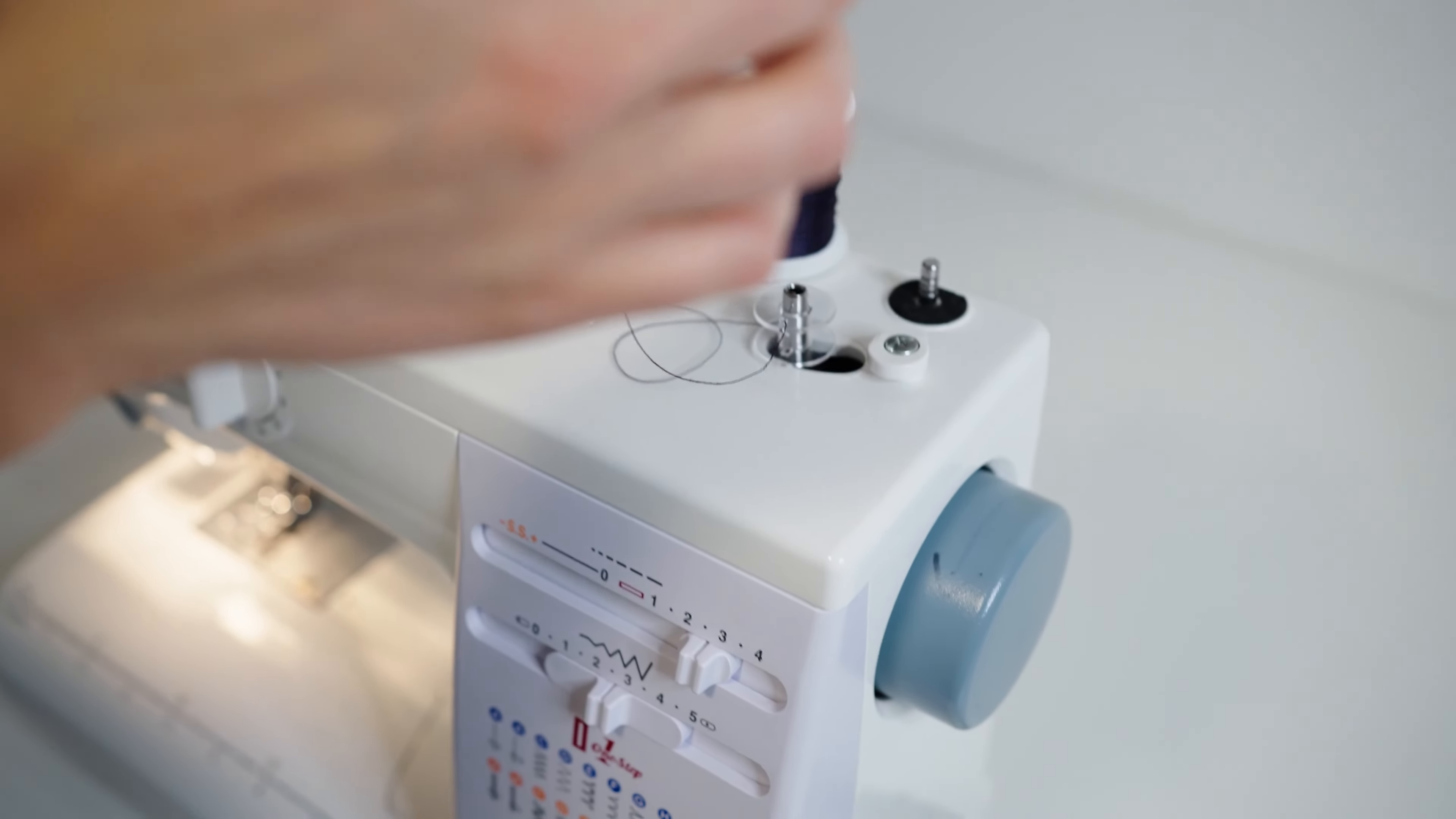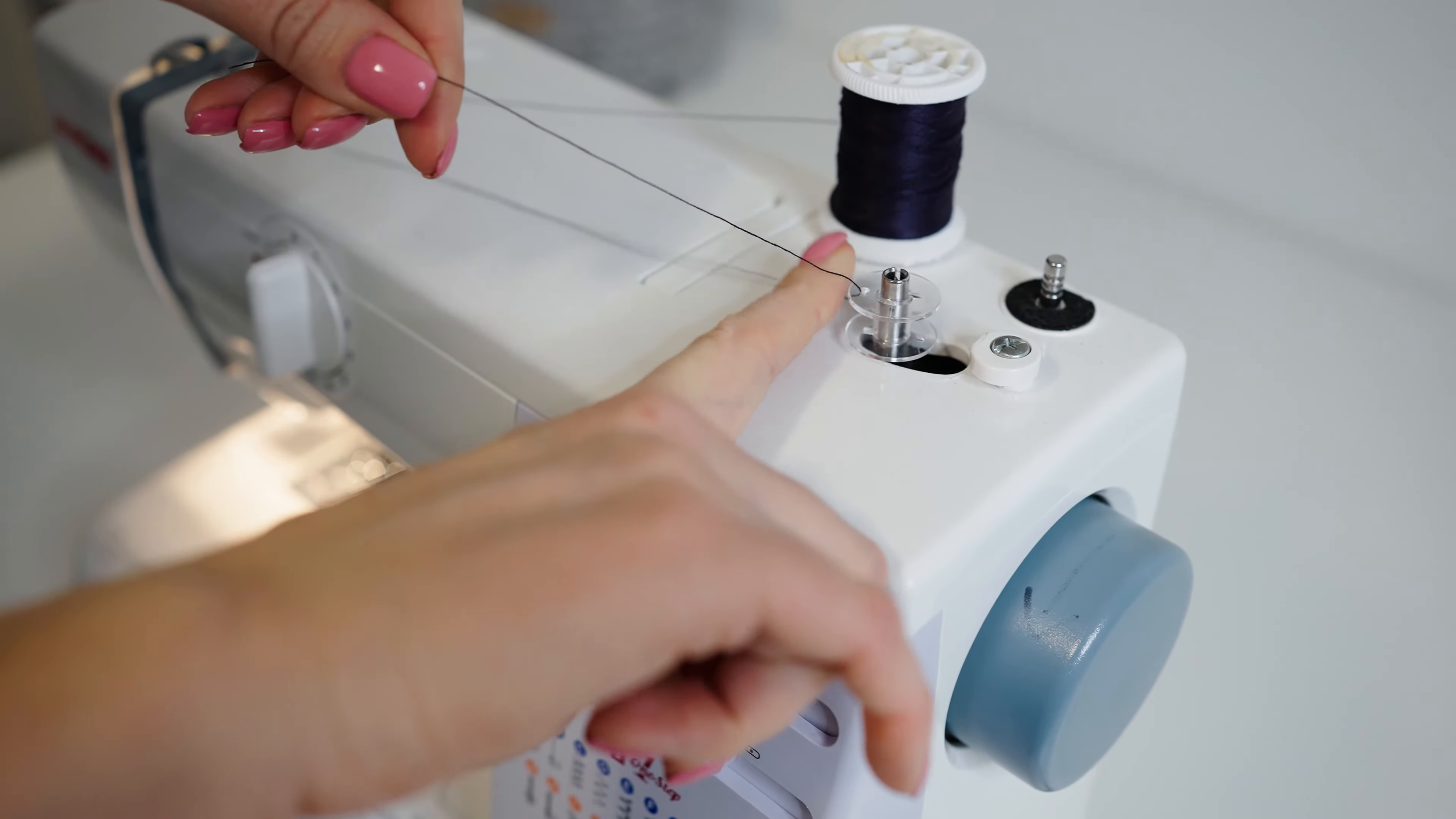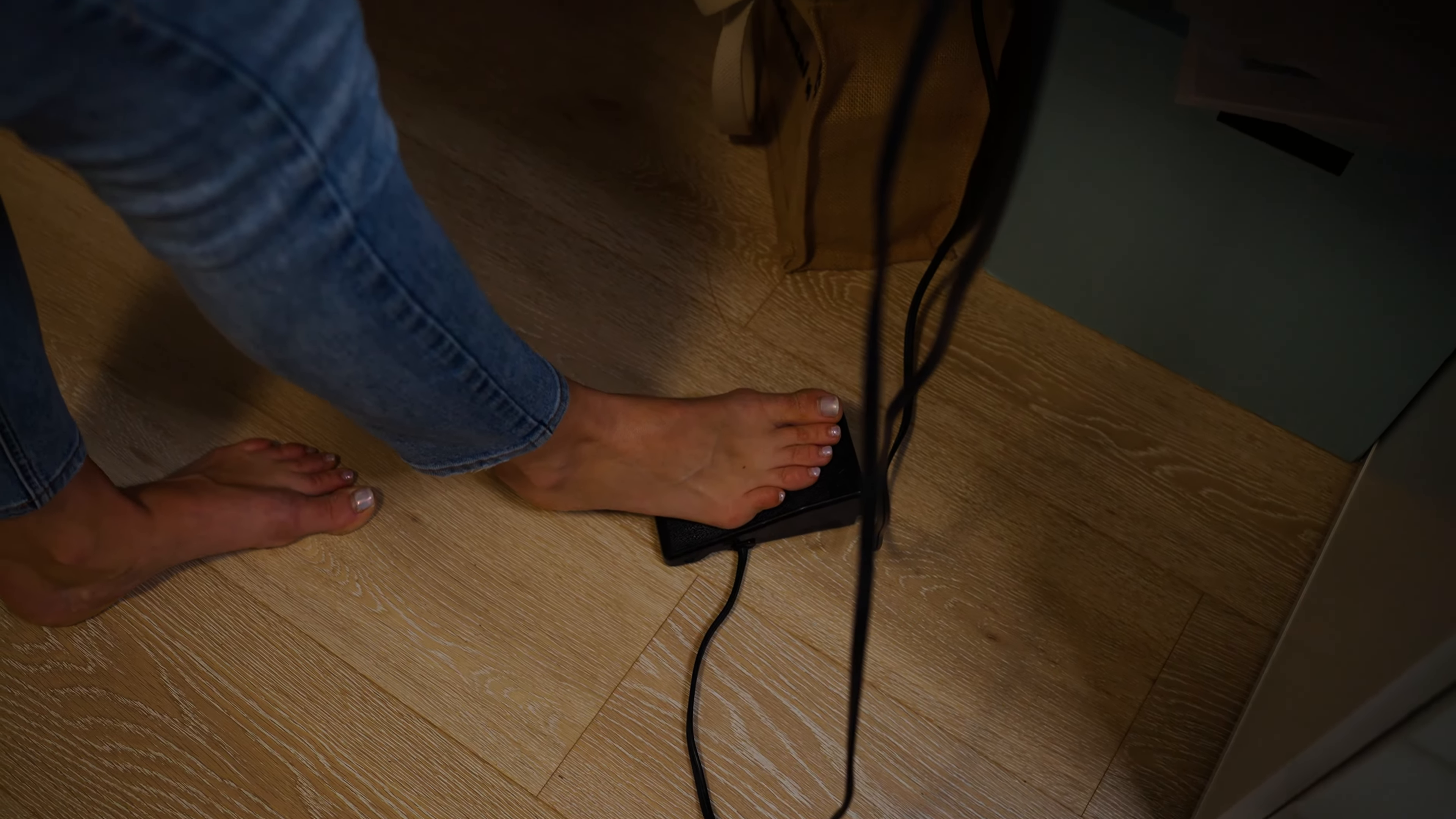Put it down onto the bobbin winder pin. Oops, my thread came off the winder. And slide it to the right. This will make it so that your needle is not supposed to go up and down.